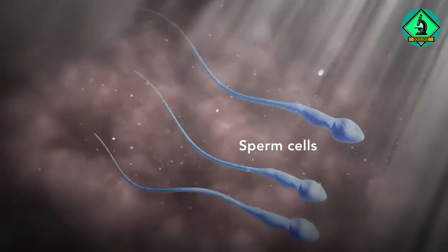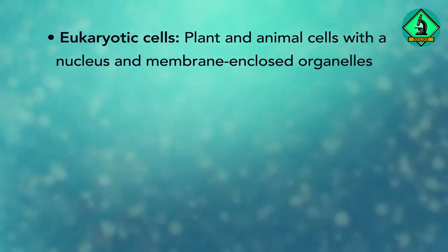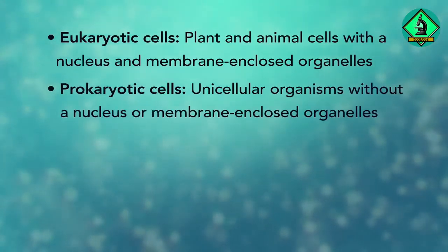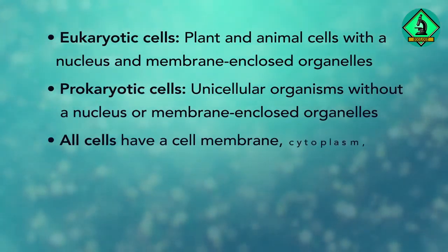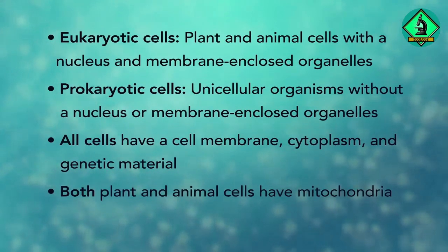In summary, remember eukaryotic cells are plant and animal cells with a nucleus and membrane-enclosed organelles, while prokaryotic cells are unicellular organisms without these things. All cells have a cell membrane, cytoplasm, and genetic material. And even though only plant cells have chloroplasts, both plant and animal cells have mitochondria.